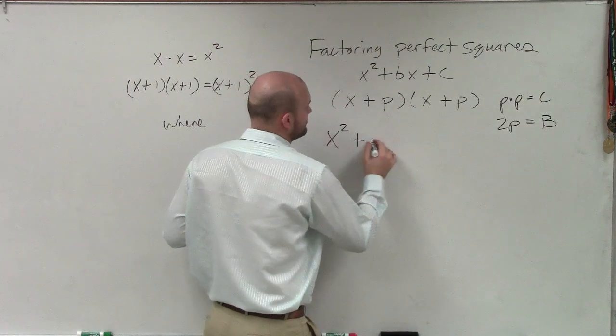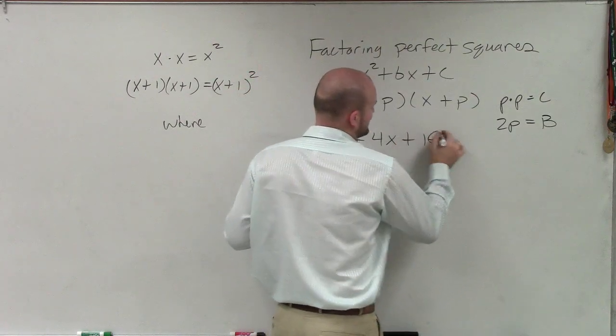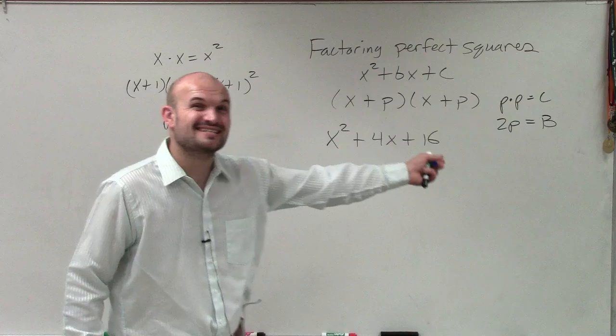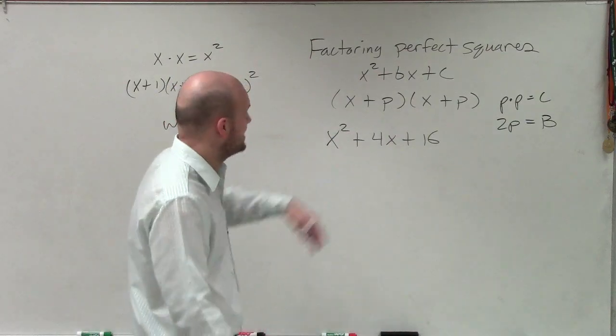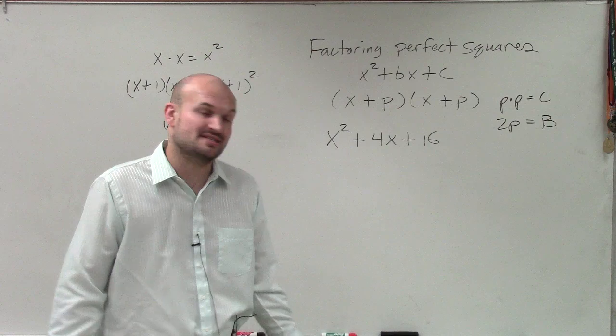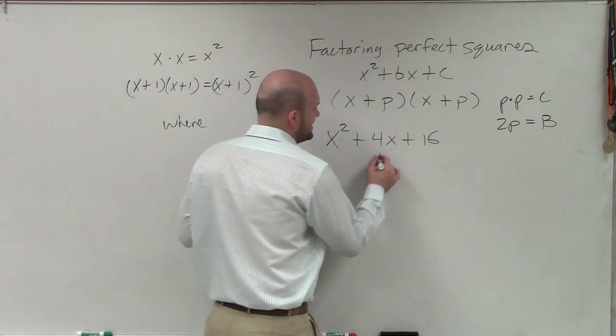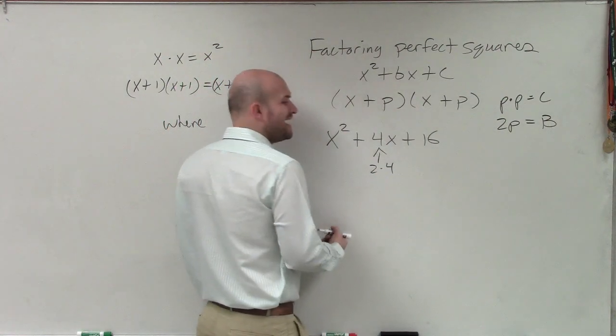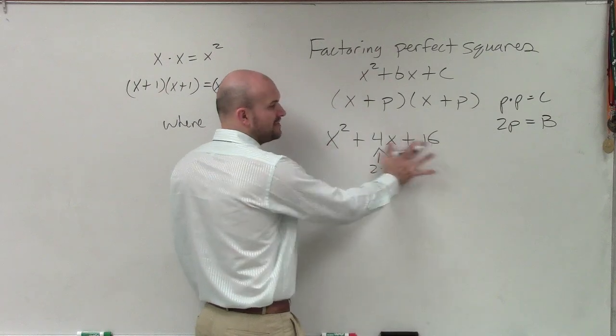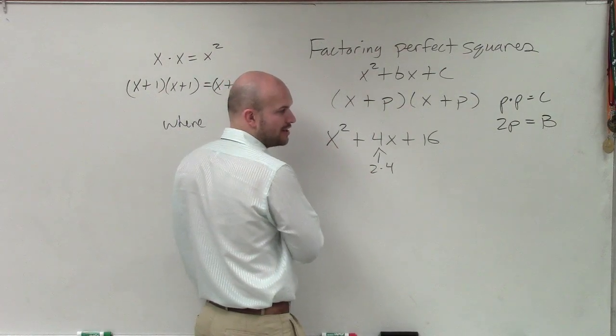So let's say I have x squared plus 4x plus 16. So I say, alright, is 16 a square number? And you could say, yes, 16 is a square number. The square root of 16 is 4. Alright, is my b 2 times 4? And in this case, no, it is not. So this is not a perfect square trinomial.